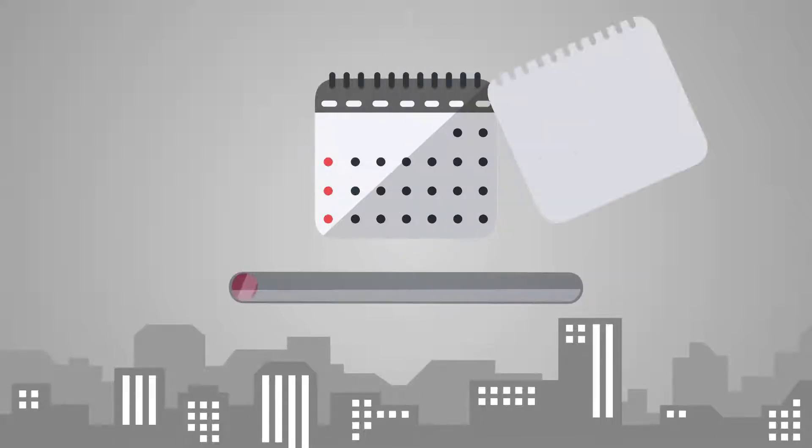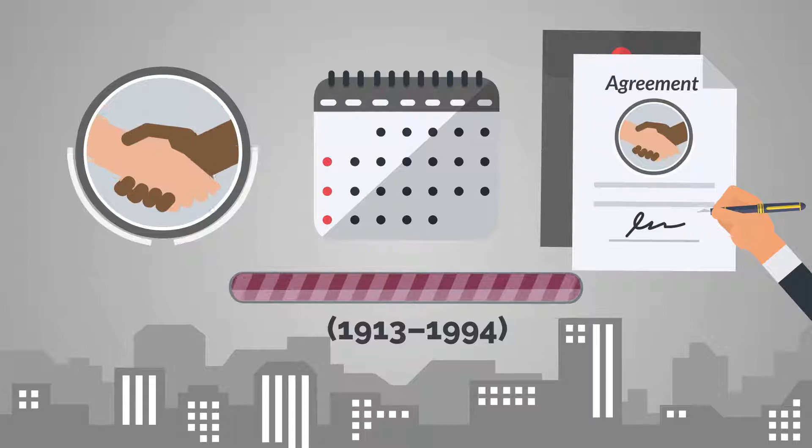For a period of 81 years, 1913 to 1994, the Natives' Land Act of South Africa made it illegal for a black person to enter a land sale agreement with a white person or to purchase property outside of designated reserves.